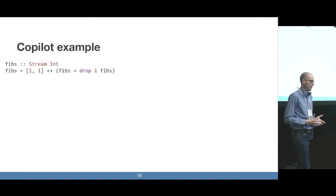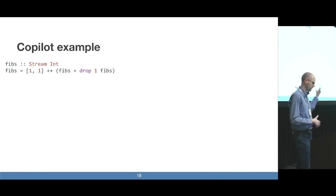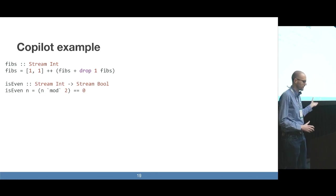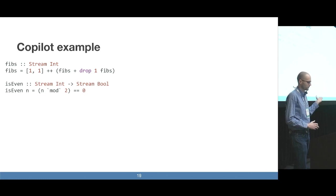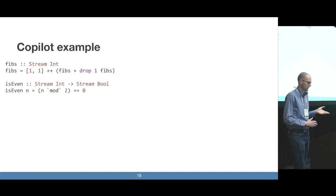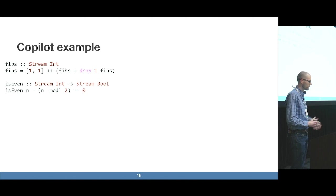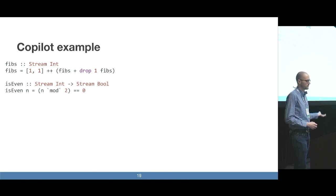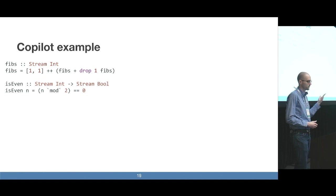Once you have streams, you can write operations that perform analysis on the streams and do interesting things with them. For instance, we can define a function that takes a stream as an argument and produces a stream as a result — for example, to check if all of the ints in a stream are even or not. If you've programmed in Haskell before, this code will look familiar because we take common operations in the Haskell prelude and lift them up to the stream level, such as arithmetic, modular division, equality, and so on.